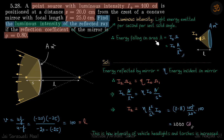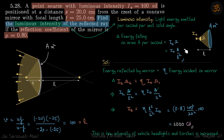From the definition of luminous intensity, energy falling on this area is i-naught times omega, where omega is A divided by l squared. The source is at a distance s from the mirror, so this light ray will be falling on the mirror and then getting reflected.